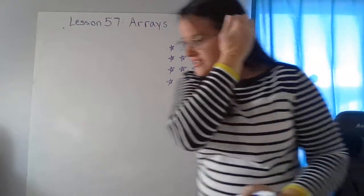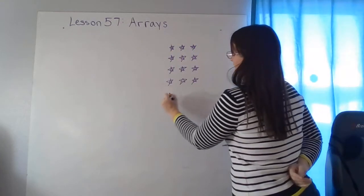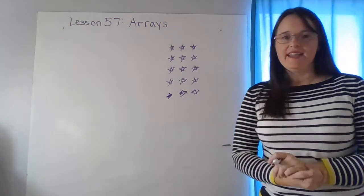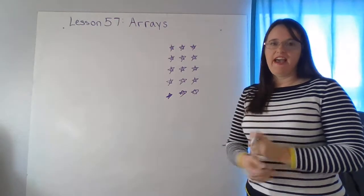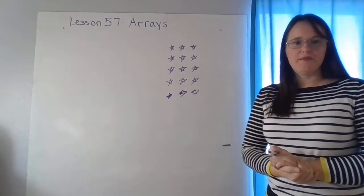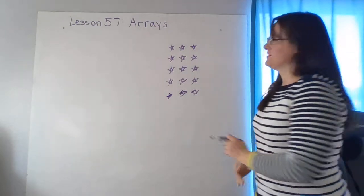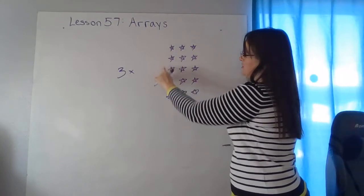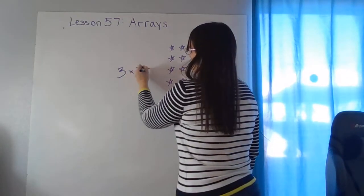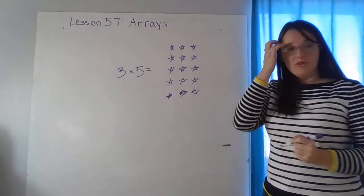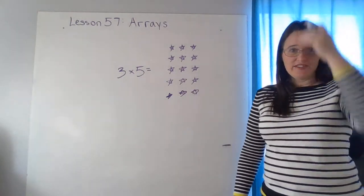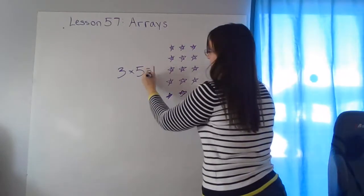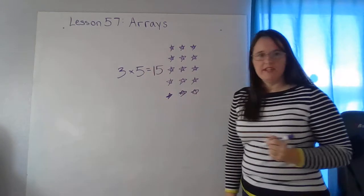Okay, so our first example, I'm just going to add a couple more stars here. Our first example is this array and I want you to tell me the multiplication fact that is shown in this array. So we can see three. Three is going to be part of it. And then let's count this way. One, two, three, four, five. Three times five equals, well now I have to figure out how many stars there are. So, I like counting by fives. Five, ten, fifteen.